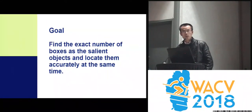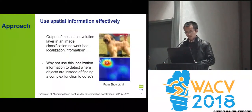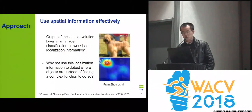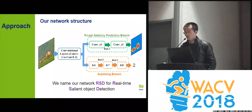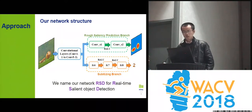To address this issue, we aim at finding the exact number of boxes and locating them accurately at the same time. We found that previous work already showed that activations in classification networks contain localization information. Therefore we could use this info as a prior to detect the location of objects. We predict a rough saliency map from which we infer the exact number of boxes based on the guidance of the subtizing output of our network.